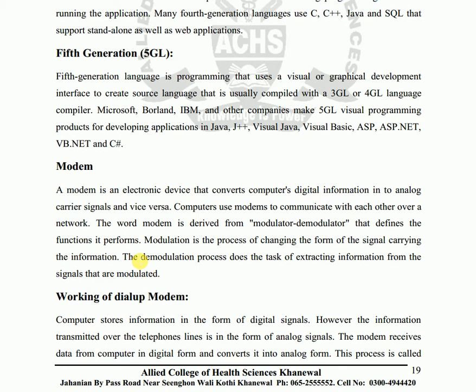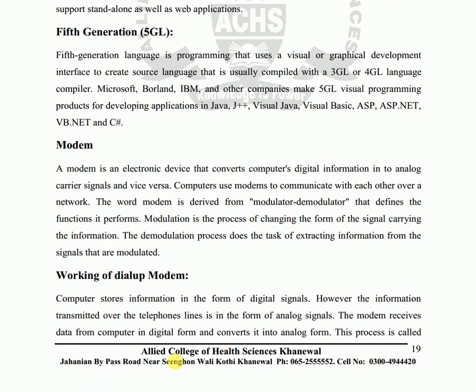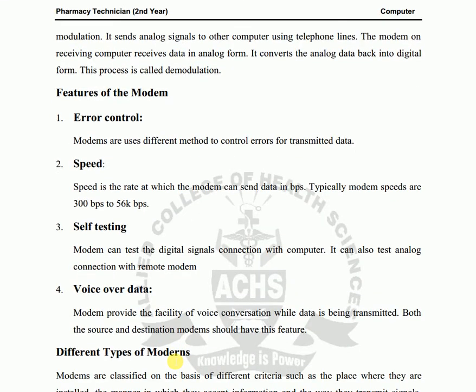Working of dial-up modem: the computer stores information in the form of digital signals. However, information is transmitted over telephone lines in the form of analog signals. The modem receives data from the computer in digital form and converts it into analog form. This process is called modulation.